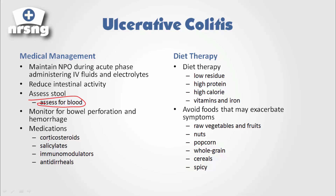Some medications we can give include corticosteroids to decrease inflammation and immune response, as well as immunomodulators to help decrease immune response, salicylates, and antidiarrheals to slow the movement of diarrhea. For diet, since we're concerned about patients getting the nutrients they need, we want to give them a high-calorie, high-protein diet, provide vitamins and iron, and a low-residue diet to prevent diarrhea and increase nutrient absorption.